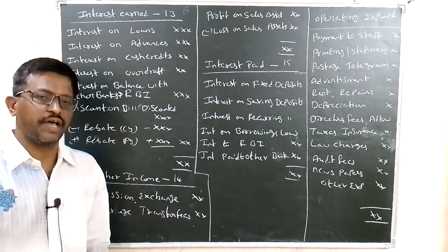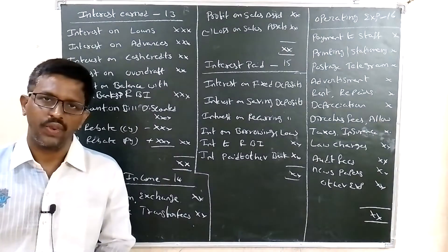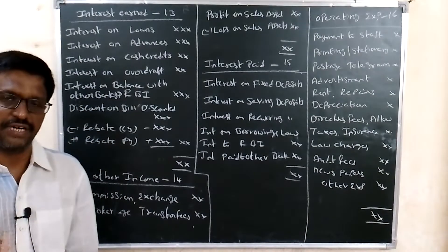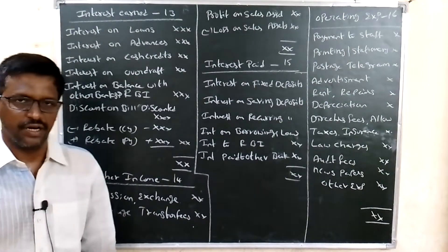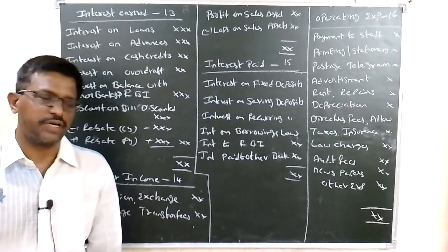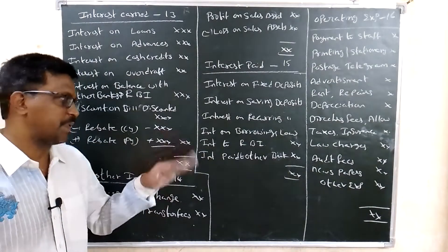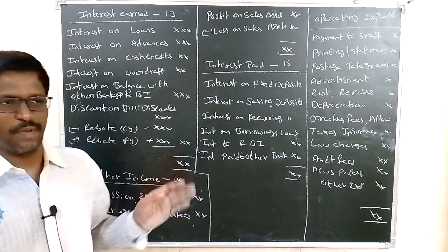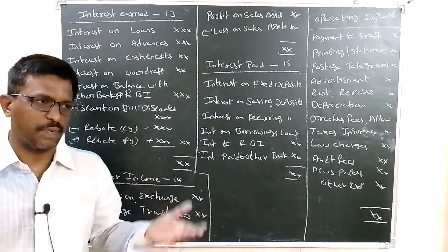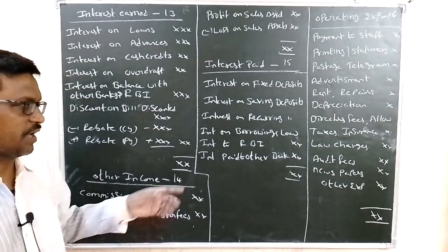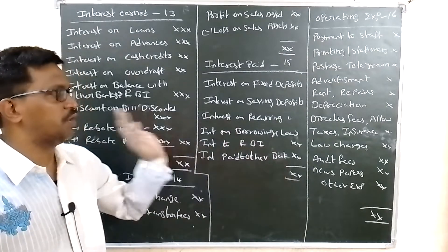Schedule 15 covers interest paid by the bank. The bank pays interest on deposits — such as interest on fixed deposit, interest on savings deposit, and interest on recurring deposit. The bank also pays interest on borrowings of loans from other banks — that is, when the bank itself borrows, it pays interest to other banks.